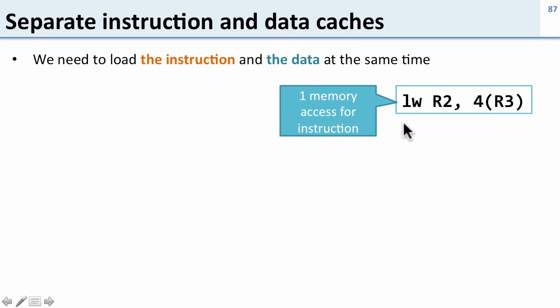If we look for example at a load word instruction here, we need one memory access to just load the instruction and then we need another memory access to actually load the data the instruction's referencing. So for memory instructions we need to access both the memory to get the instruction and the memory to get the data.